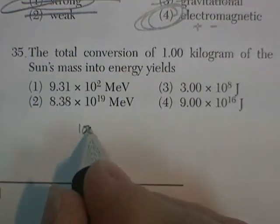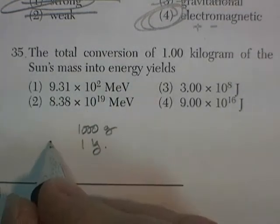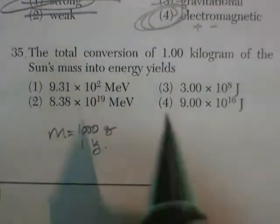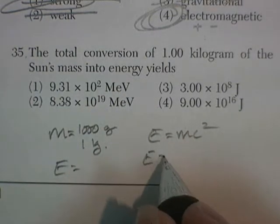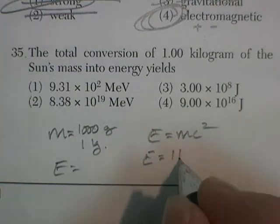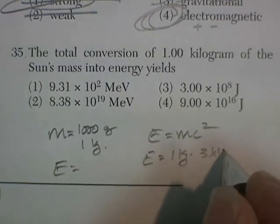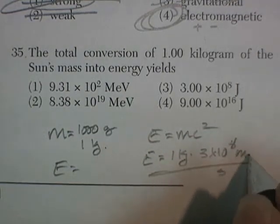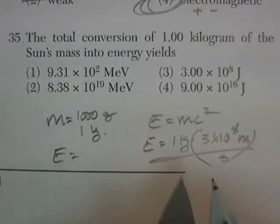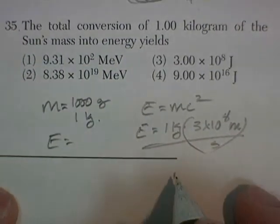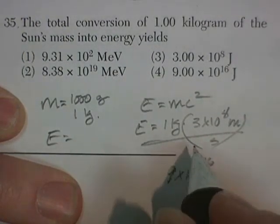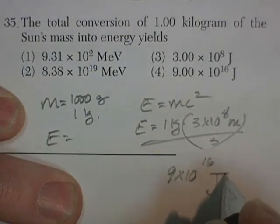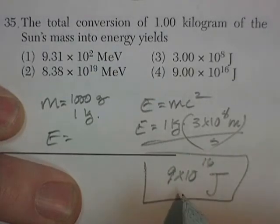Question 35. The total conversion of 1 kilogram, 1,000 grams, 1 kilogram, which is the mass. And it's converting it entirely into energy. So, E equals MC squared. So, energy is equal to a kilogram times the speed of light. So, that's 3 times 10 to the 8 meters per second squared. So, 3 squared is 9 times 1 is 9. Times 10 to the, 2 times 8 is 16. And kilogram meter squared per second squared, so that's joules.